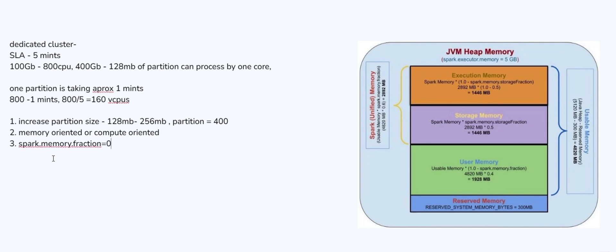You can increase spark.memory.fraction to 0.8. Usually it is 60% of the memory available for execution — the unified memory. If you want to increase this unified memory from 60% to 80%, you get more space to store and process your data. With this configuration, you can change that value. If you require more storage, you can also use the spark storage memory configuration to control how much memory is used while storing data in the executor.